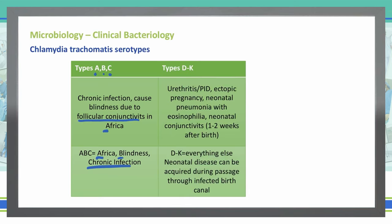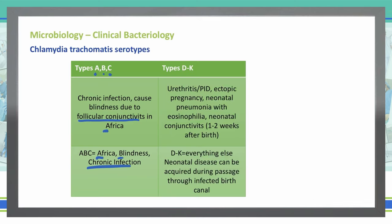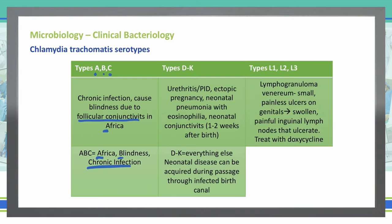You can think of types D through K as just being everything else outside of your ABC — Africa, Blindness, Chronic infections. Neonatal disease can be acquired through the infected birth canal, as we just discussed.